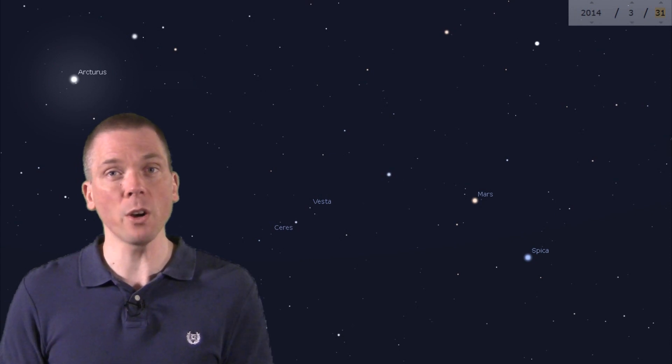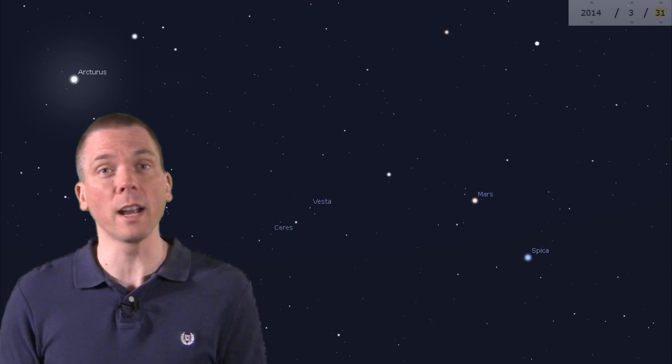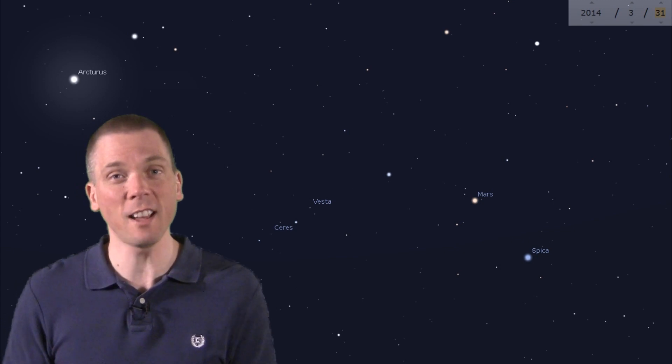A short hop away from Spica and Mars are two orbiting bodies at the other end of the scale, although they don't orbit each other, just the Sun. These are the asteroids Vesta and Ceres.